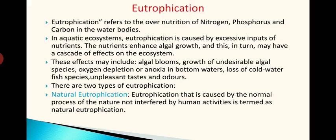In an aquatic ecosystem, eutrophication is caused by excessive input of nutrients. The nutrients enhance algal growth and this in turn may have a cascade of effects on the ecosystem. If nutrient availability is much higher, that will promote the growth of algae within the water bodies.